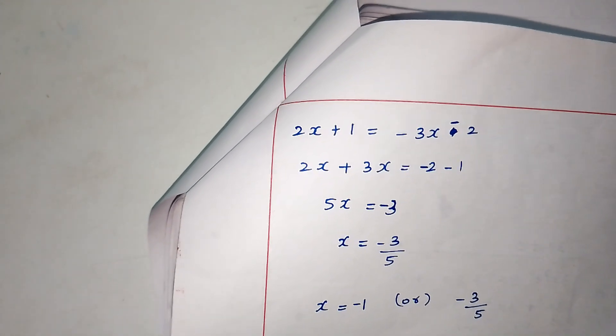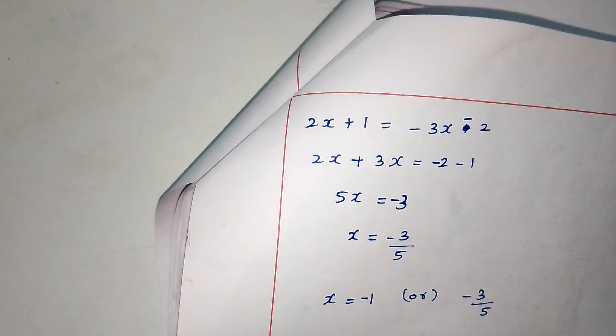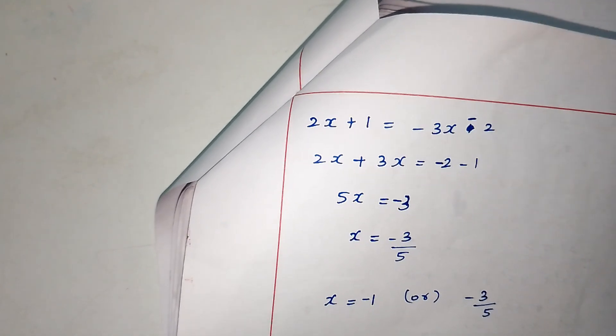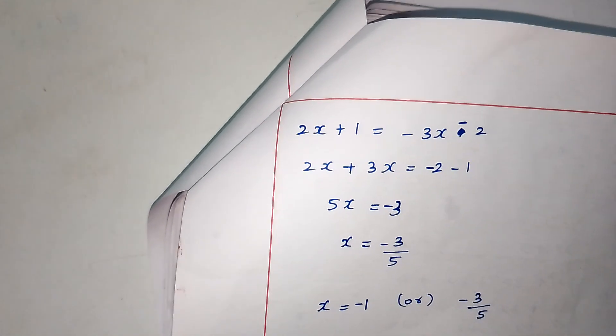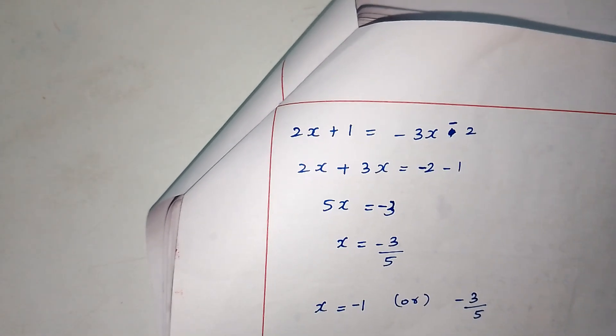0 is equal to minus 1. 4x plus 1. The value obtained is the highest value. Thank you.